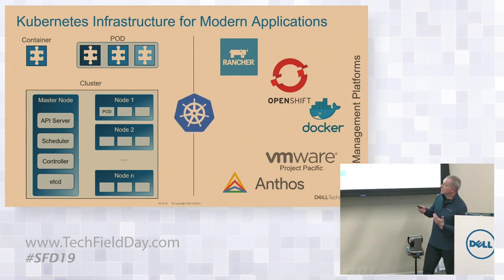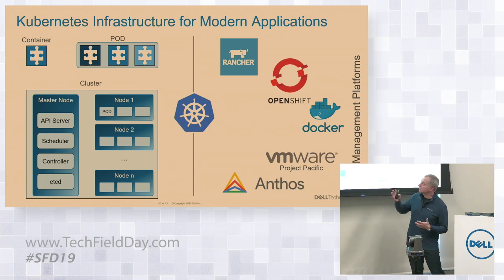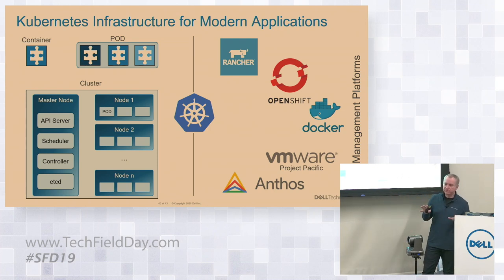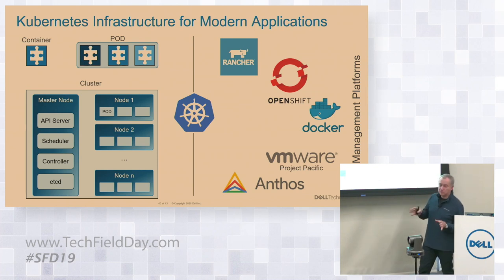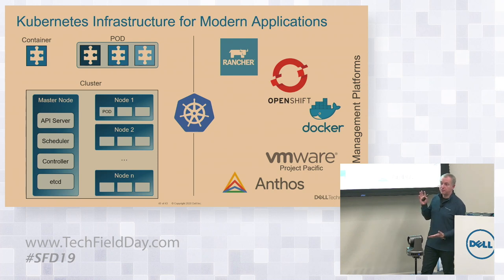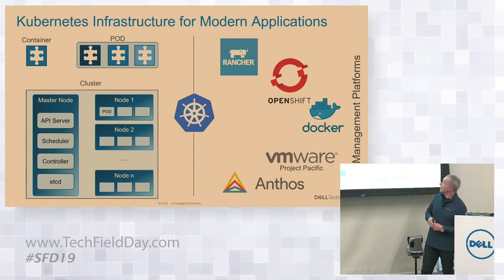On the left-hand side, we see a couple of things. We have a Kubernetes cluster, which includes master nodes and worker nodes — those are the terms you'll hear me using. On the right-hand side, we see a number of commercial Kubernetes distributions that are available today, all of them quite popular.